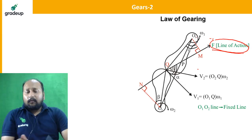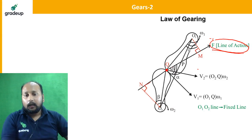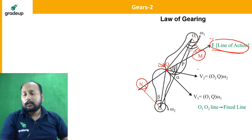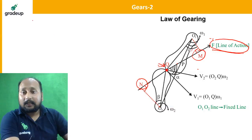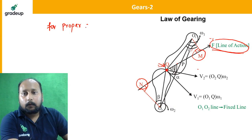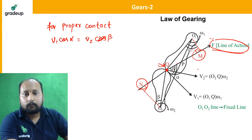For proper contact between the two teeth, the condition is: V1·cosα = V2·cosβ. Here α is the angle between the line joining O1 to the point of contact Q and the perpendicular to the line of action, and β is the corresponding angle at O2. So the component of velocity along the line of action must be equal for both teeth.